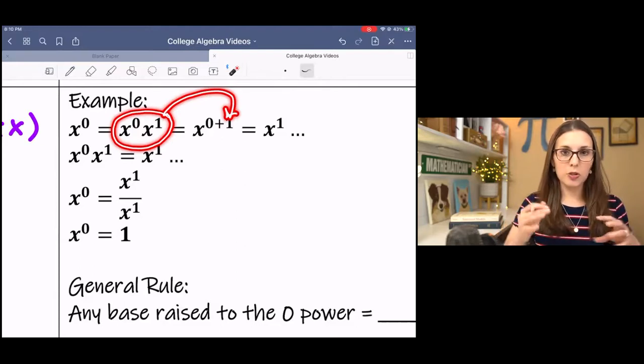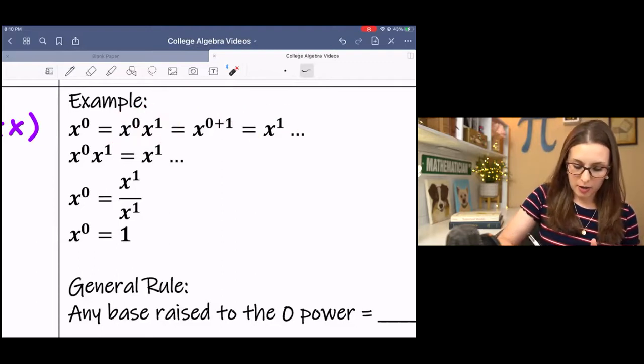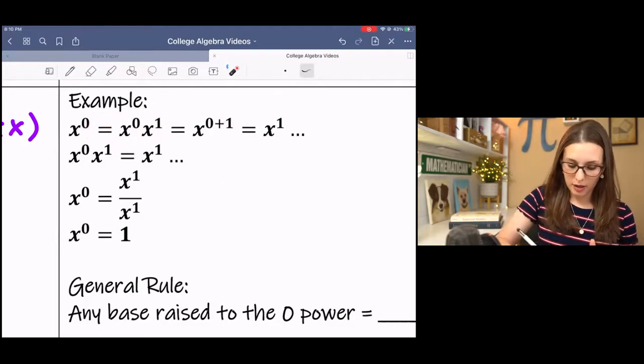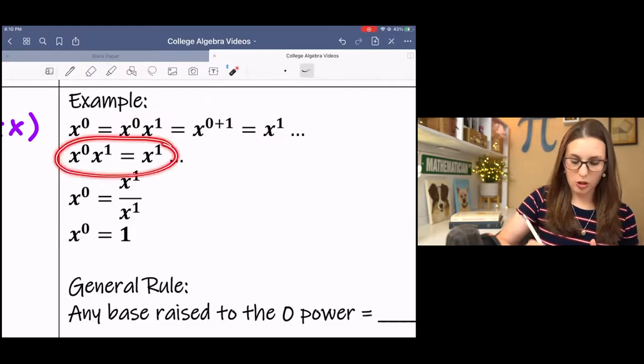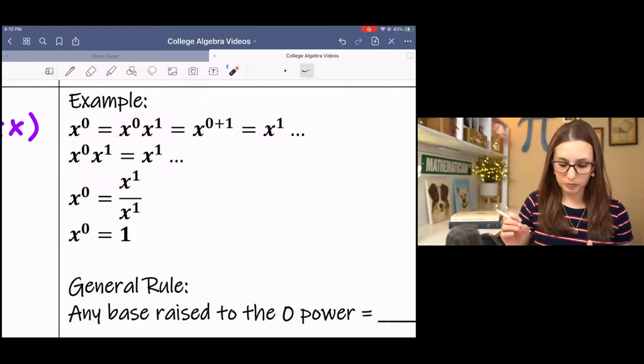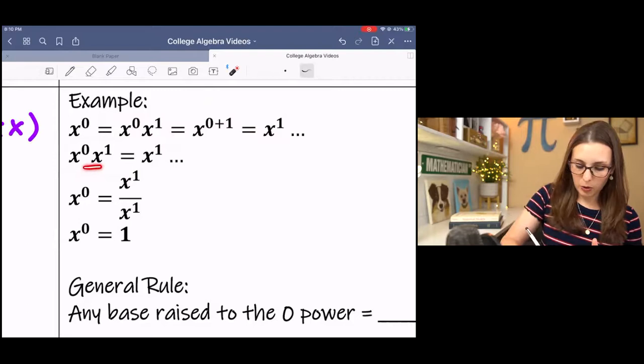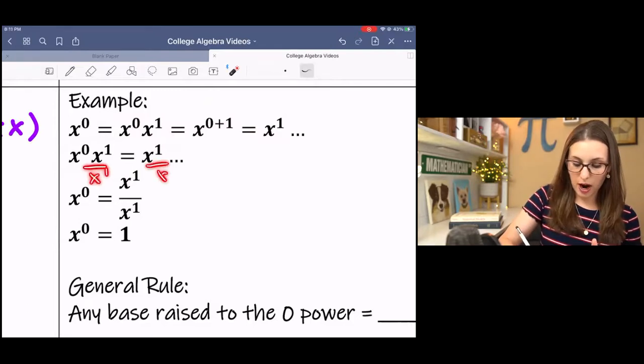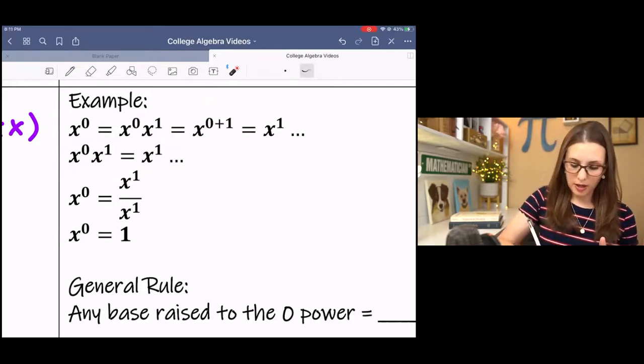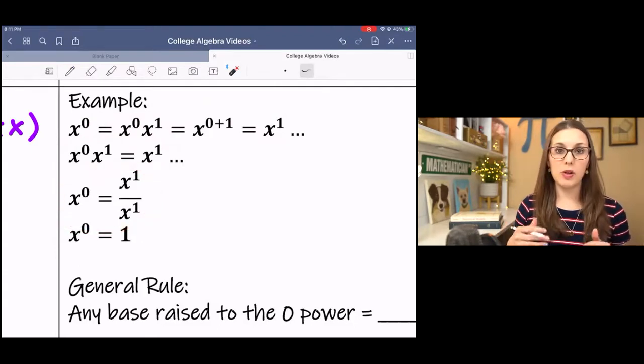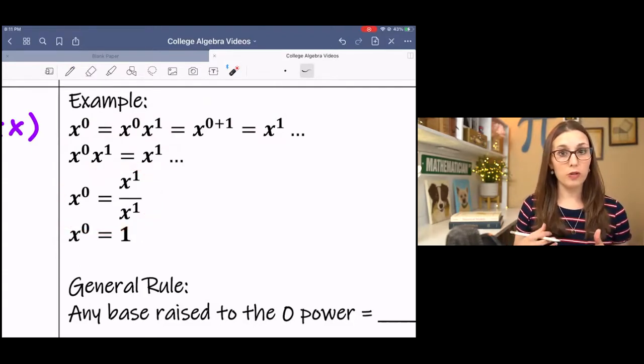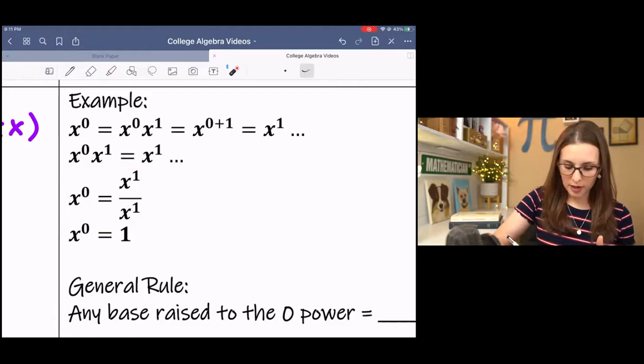Then what I'm going to do is multiply that by this other side, and I have this equation. If I divide both sides by x to the 1st to isolate x to the 0, then I end up with x to the 0 equals x to the 1st over x to the 1st.